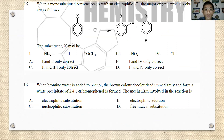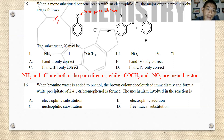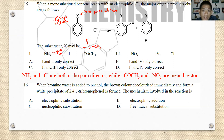Number fifteen: when monosubstituted benzene reacts with electrophile E, the major product is shown at the ortho and para positions, so X is an ortho-para director. The easiest key: if the substituent has only single bonds attached to the ring, it is ortho-para. NH2 has only single bonds; Cl is also a single bond — both are ortho-para directors. COCH3 and NO2 contain pi electrons — they are meta directors. The best answer is B.